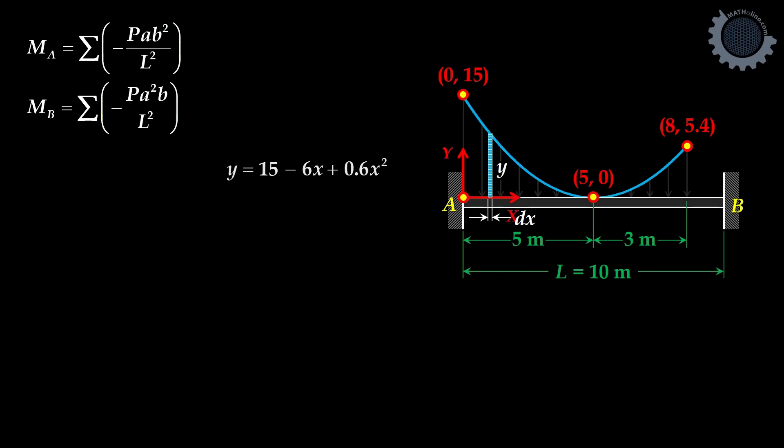Now the P or P is simply Y DX. Now we have A is equal to X and B is equal to 10 minus X. We can now solve the end moments.